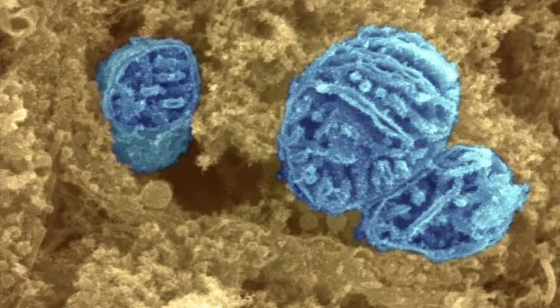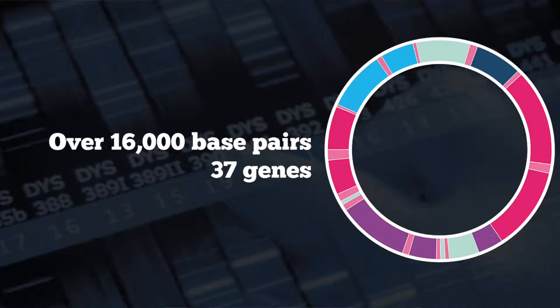So what are mitochondria? Mitochondria are structures within the cell that take energy from food and develop it into a form that is useful for cells. Mitochondrial DNA itself codes for over 16,000 base pairs, which is 37 genes.